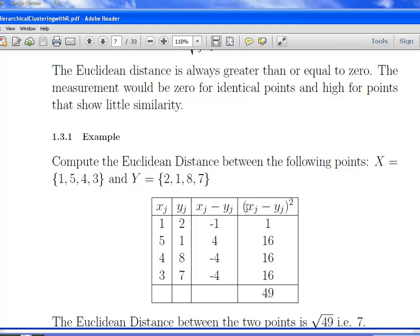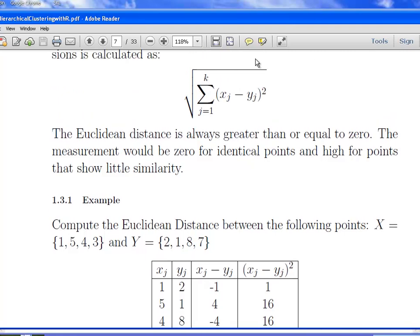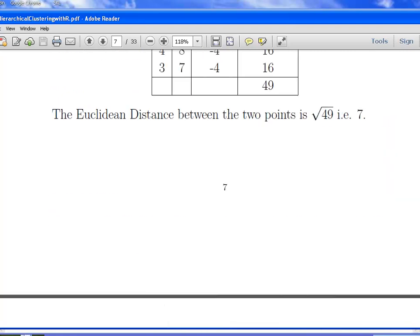Then what we'll do is square it. So here we have 1, 16, 16, 16. And therefore, add them all up, and we get a squared Euclidean distance of 49. What we do then is we get the square root of that at the end. The Euclidean distance is therefore the square root of 49, it is seven. It's straightforward enough. If you're familiar with Pythagoras' theorem, you can see that's directly coming from Pythagoras' theorem.